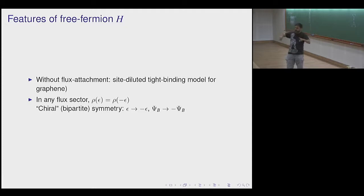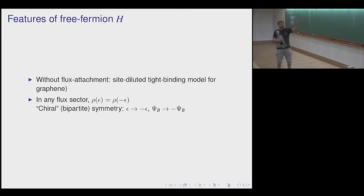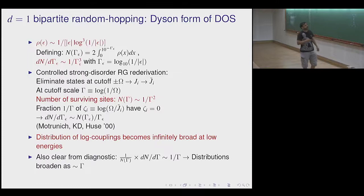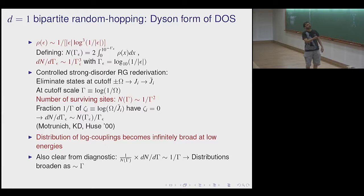Without flux attachment, this is just the site-diluted tight-binding model for graphene, which has a bipartite or chiral symmetry: every eigenenergy ε has a partner −ε and the density of states is symmetric about zero. A lot is known about these bipartite random hopping problems. In one dimension there is a very old calculation predicting a strong divergence in the density of states near zero energy — the Dyson singularity.